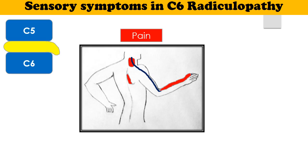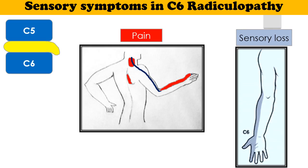The pain is also perceived in the thumb and index finger. The sensory loss is seen in the thumb, index finger, radial hand, and radial forearm.